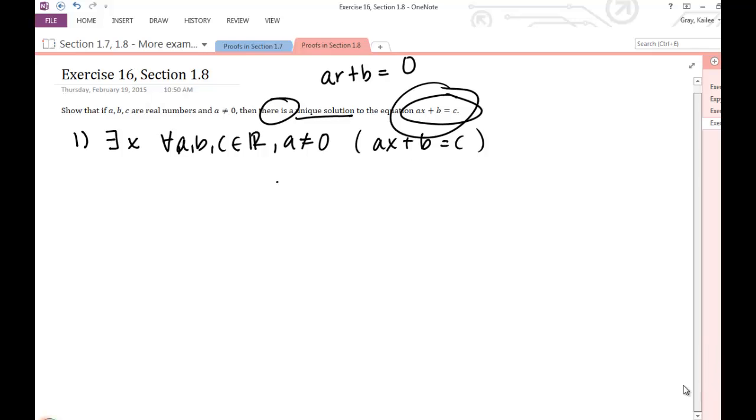The other piece that we need to do is the uniqueness. So we want to show there exists a unique—our regular backwards E, but now we're adding that exclamation point to state that it's a unique x value. So we can find a unique solution to this linear equation.